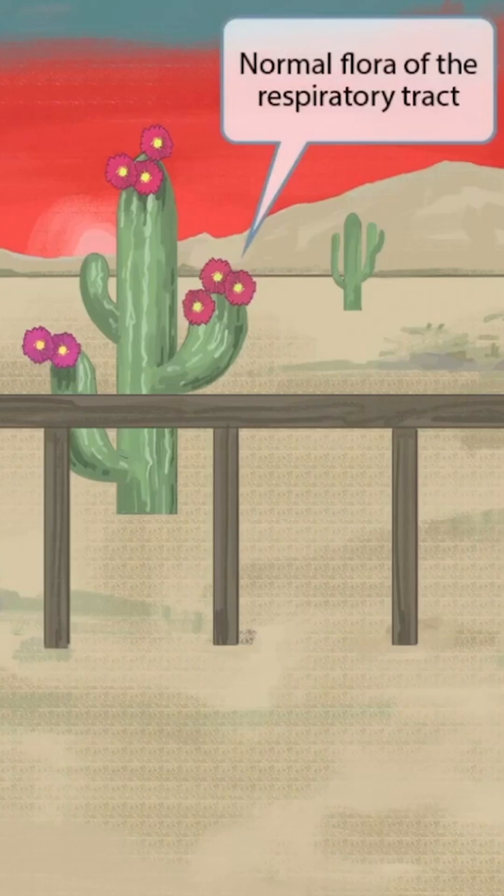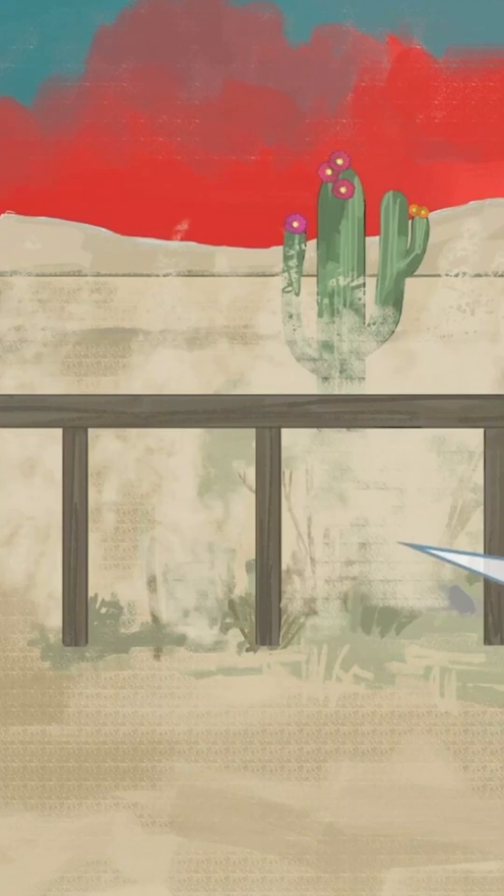Notice that we've added some flowers on top of the cacti. The flowers are used as a symbol for flora, and the fact that they're up high on top of the cacti should help you remember that Moraxella is part of the normal flora of the respiratory tract.